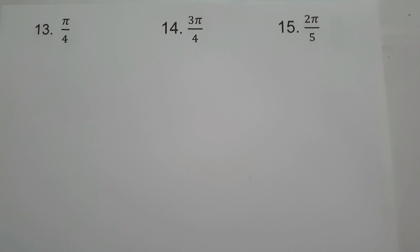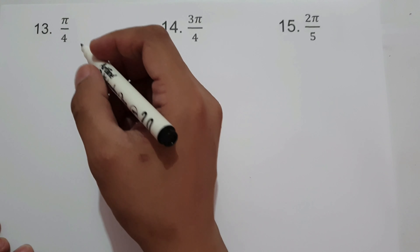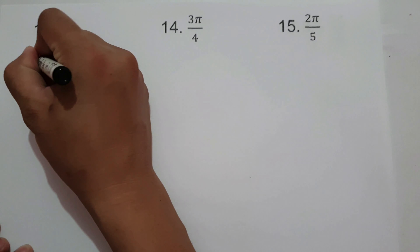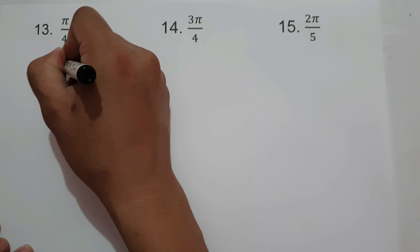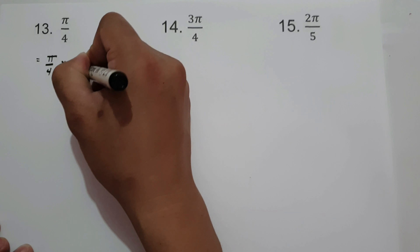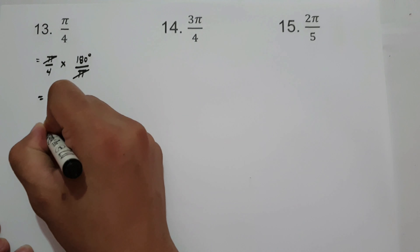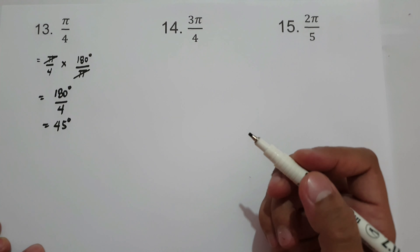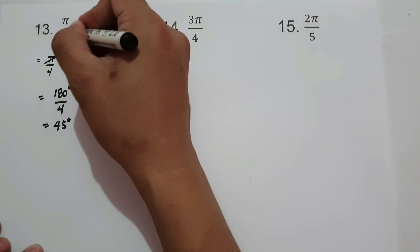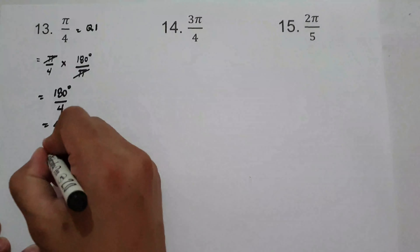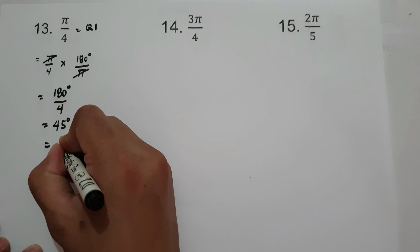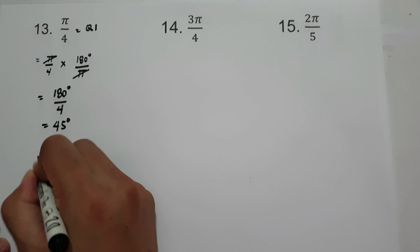What about this set of examples? If the given measure is in radians, how do we find the reference angle? We need to convert radians to degrees by multiplying the given radians by 180° over π. For π/4, we multiply by 180°/π — the π cancels — giving 180°/4, which is 45°. So 45°, or π/4, is located in quadrant 1. The reference angle in quadrant 1 equals the given angle, which is 45°.